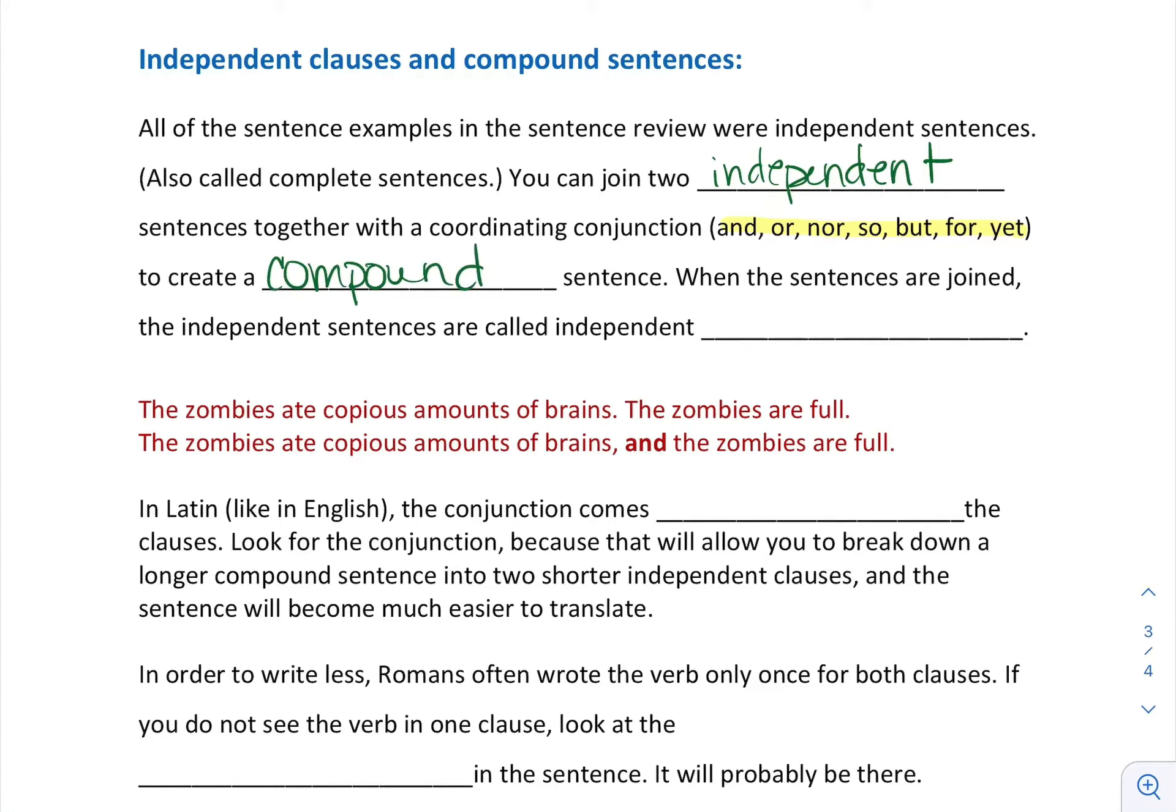Now when the sentences are joined, the independent sentences are called independent clauses. We use this in English too, so if you've taken Mrs. Larelli's classes or grammar classes, you're going to know a lot about clauses. For example: "The zombies ate copious amounts of brains. The zombies are full." Two totally independent sentences, each of them are complete. I can add a comma and an 'and' and they become a compound sentence: "The zombies ate copious amounts of brains, and the zombies are full."